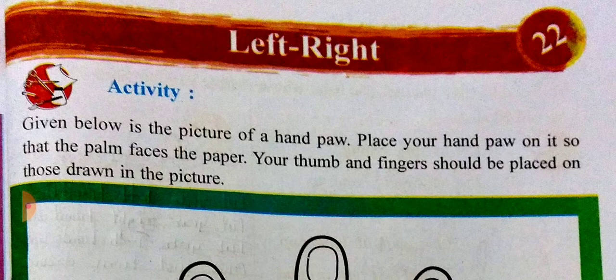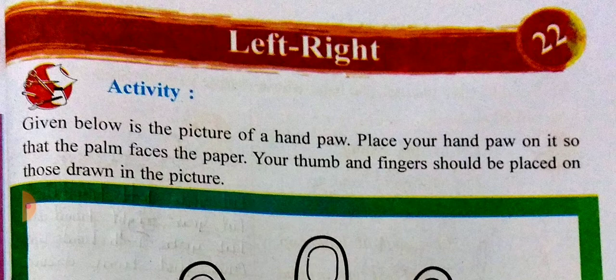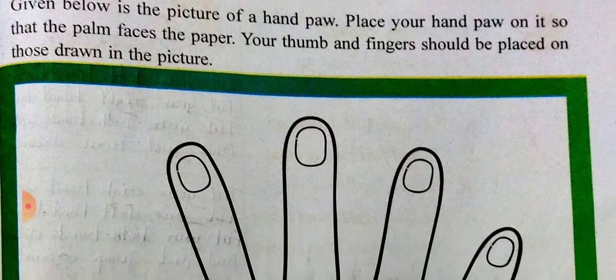In this chapter, on the first page, an activity is given. Below the picture of a hand, place your hand on it so that your palm faces the paper. Your thumb and fingers should be placed on those drawn in the picture.